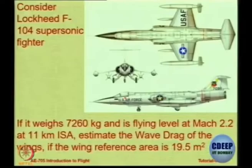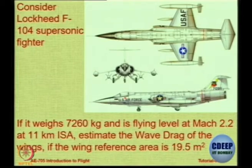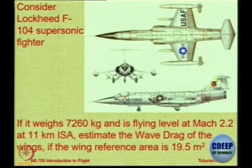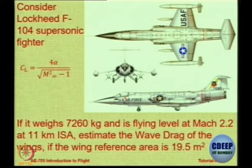You can see in the front view it is a very thin wing aircraft — T/C is very small. This aircraft weighs 7260 kilograms and is flying level at Mach 2.2 at 11 kilometers under ISA conditions. The wing area is 19.5 square meters — the reference wing area as seen in the top view including the part inside the fuselage. That is the reference area used in calculations for lift and drag.